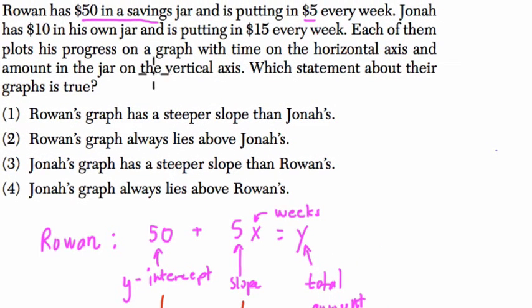So each of them plots its progress on a graph with time on the horizontal axis. So the x-axis here is time. That makes sense. Usually time is written on the x-axis. And then y is the amount in the jar, the total amount. I'll just put a dollar sign. Which statement about the graphs are true? Okay. So we look at these two. And let's just make an observation.